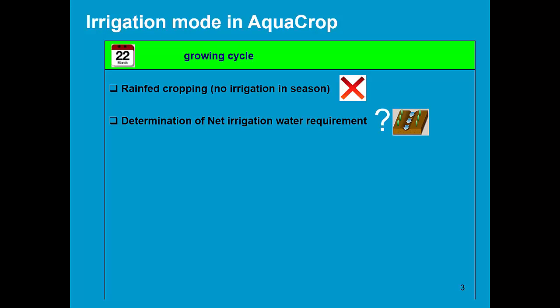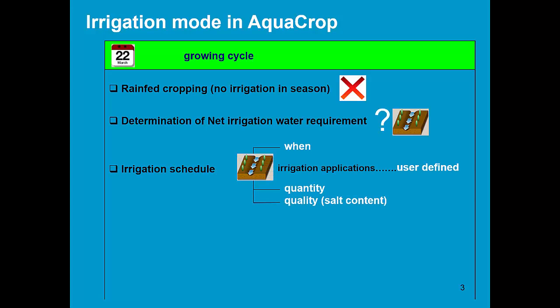In AquaCrop we can ask to determine the net irrigation requirement, which is one of the other modes for irrigation. There is also the evaluation of an existing irrigation schedule. So the user specifies when water was applied, what was the quality of the water and the quantity of the irrigation water.